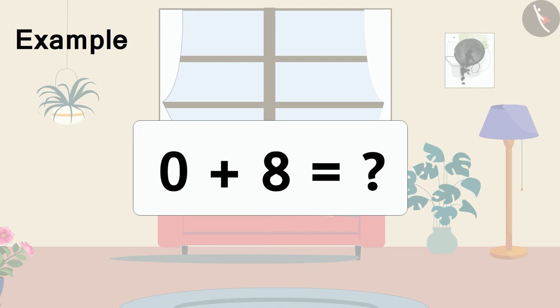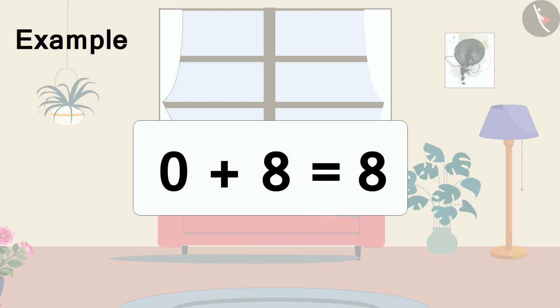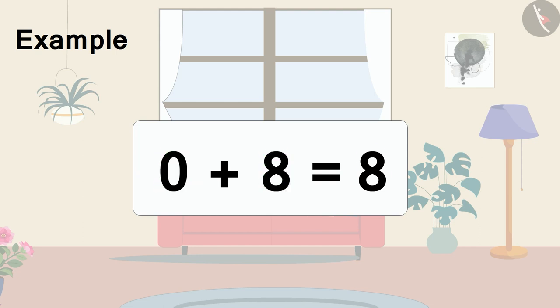Perfect answer! The total number will be 8, because 0 means nothing. And if you add nothing to 8, then it will be equal to 8.